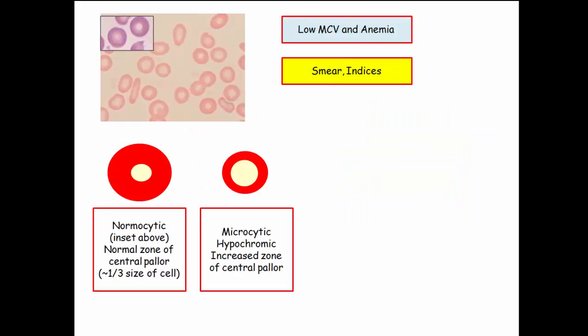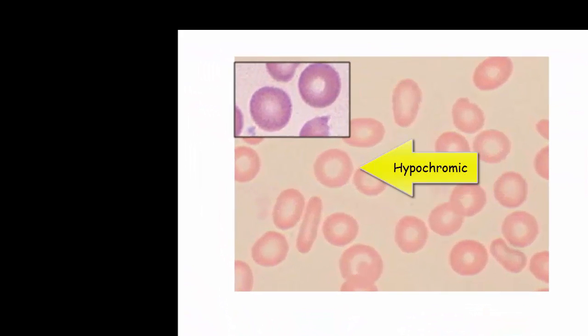What do you need to know about the smear? Pictured here is a drawing of a normal red cell. It has a normal MCV and is referred to as normocytic. It has a zone of central pallor that is approximately one-third the size of the cell. Pictured next to it is a microcytic hypochromic cell. Microcytic implies a smaller cell with an MCV less than 80. Hypochromic refers to the increased zone of central pallor.